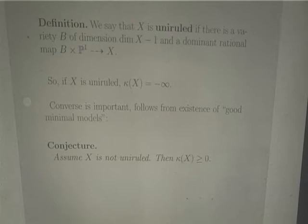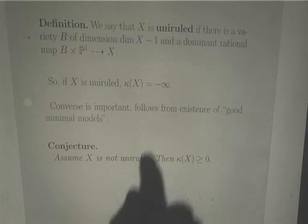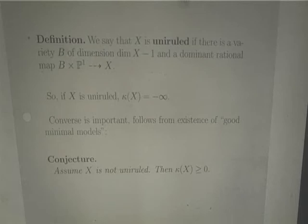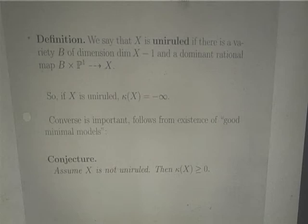The converse is an important conjecture, sometimes called the minus infinity conjecture. It follows from the existence of good minimal models, and it's part of the minimal model program, which I will discuss later. The conjecture is that this is an if and only if: the only way a variety can fail to have any canonical or pluricanonical differential forms whatsoever is if it's covered by rational curves.